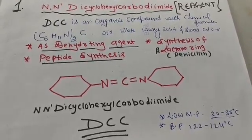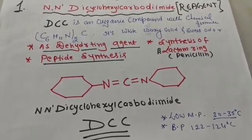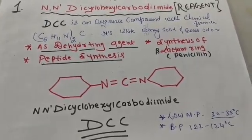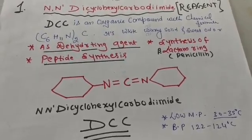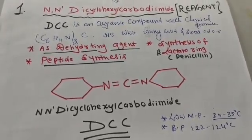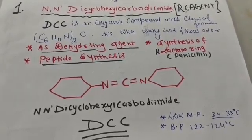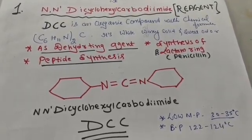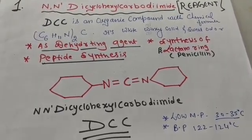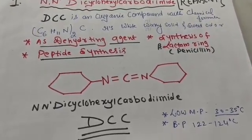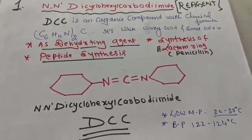The chemical formula of DCC is (C6H11)2N=C=N. It is called dicyclohexyl because there are two cyclohexyl rings bonded with the imide group N=C=N. It is a very important organic reagent that helps in the synthesis of many organic compounds. It is generally a white waxy solid with a sweet odor.